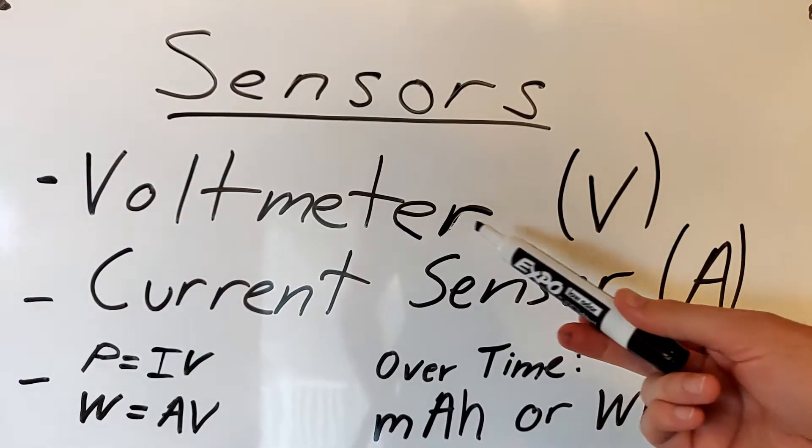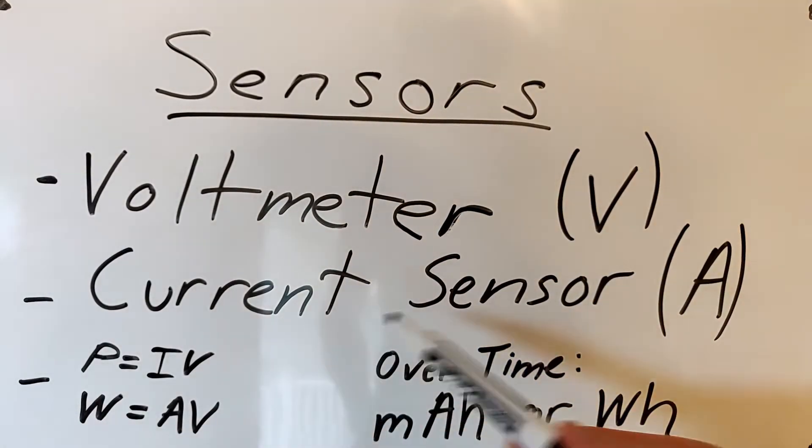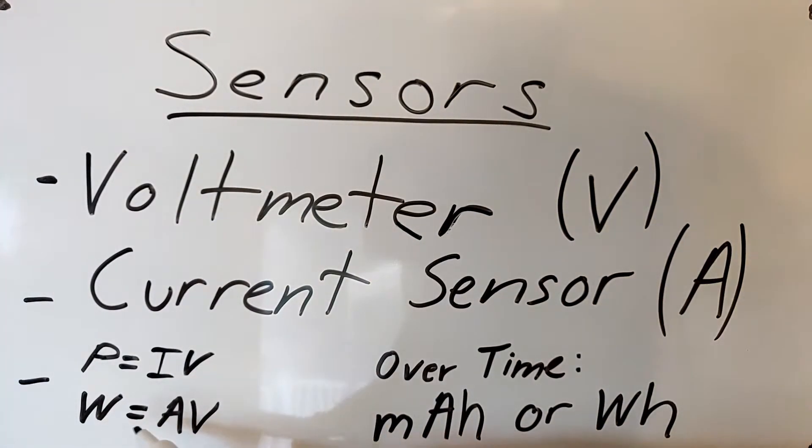The voltmeter is used to measure the battery voltage. The current sensor measures the current. Power equals current times voltage or if you want to think of it in terms of units. Watts equal 1 amp times 1 volt. If you keep track of the power used over time you can also display watt hours which will tell you how much energy has been used from the battery or milliamp hours which will tell you how much charge has been used from the battery.